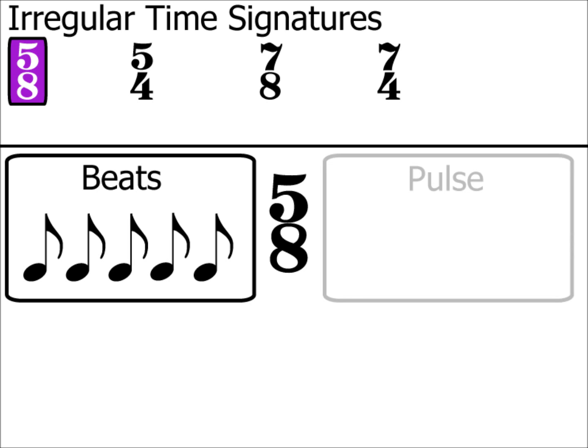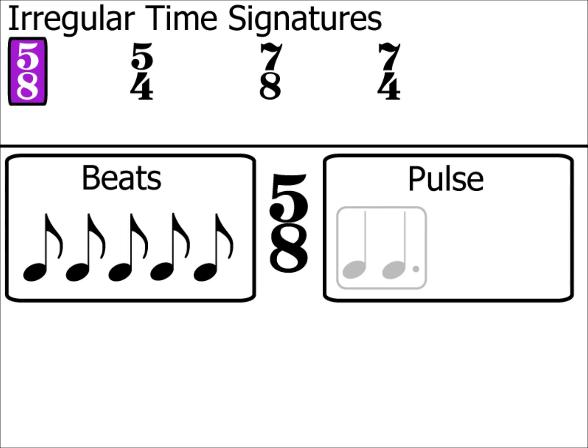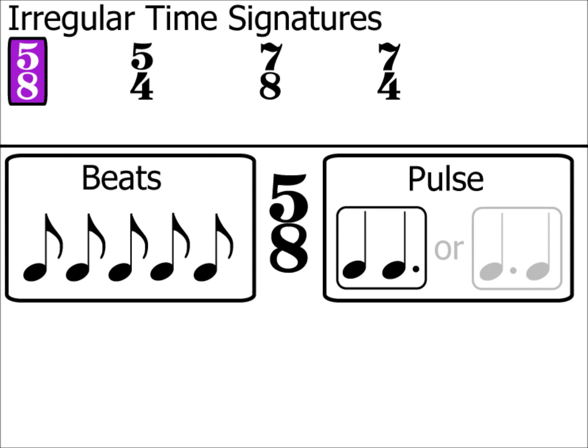However, how many pulses are there in each bar? Well, there are actually 2, but they are not the same in length. A bar in 5/8 can either be a crotchet pulse followed by a dotted crotchet, or the other way around. Whichever way around they are placed, the bar will still equal 5 quavers.